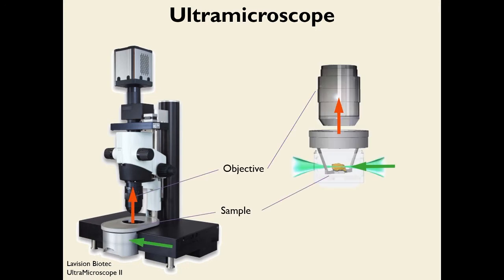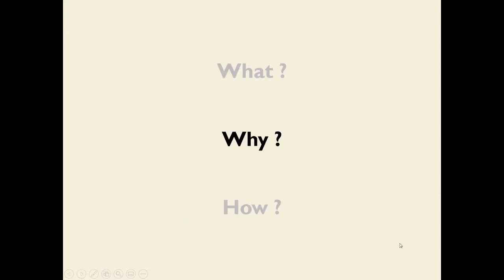This is what it looks like. The three elements I described are visible: we have a sample with fluorophores supported by a cradle system and immersed in a fluid that has the same refractive index as the sample. That sample is illuminated from the side by a light sheet made with laser light, which excites fluorophores in the sample. An objective placed perpendicular to the angle at which the light sheet comes in collects the fluorescence and sends it through magnification optics and filters to a camera.